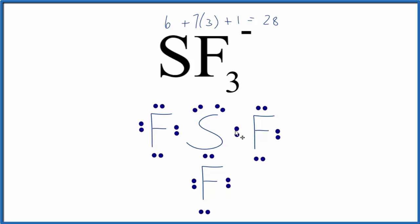So our central sulfur atom, it has 10 valence electrons, but that's okay because it can have an expanded octet. The fluorines, they each have eight, so their octets are full.